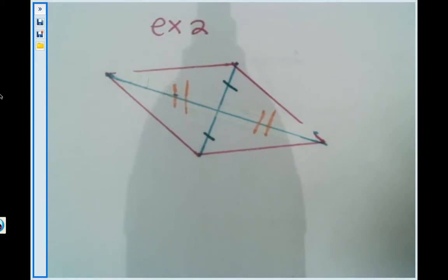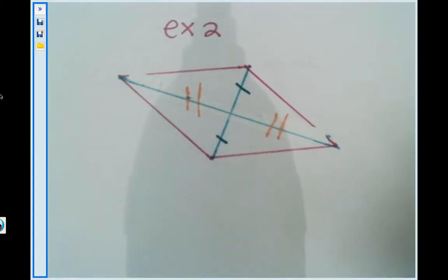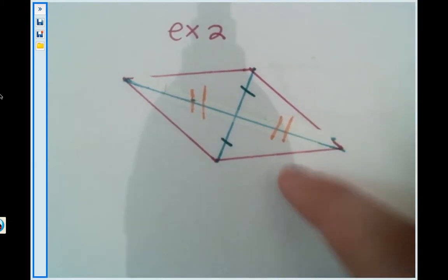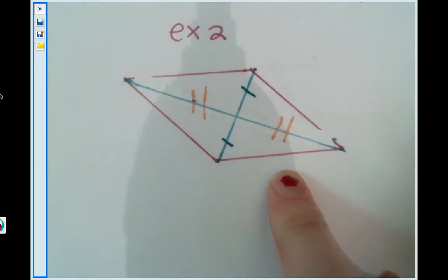pieces of the diagonals are congruent. So is this one of the cases we talked about that will allow me to identify this quadrilateral right here as a parallelogram?